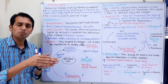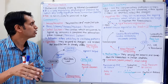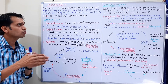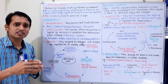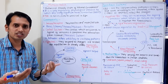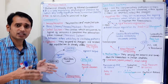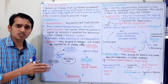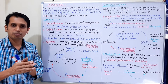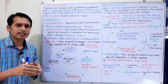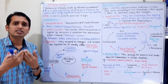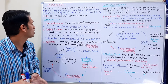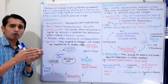Homeostasis is a self-regulating physiological process by which any living organism tends to maintain stability. The living organism maintains its internal environment in a steady state so that it can survive long-term. When stress is applied, cell physiology and structure are altered, activity increases, and cell injury or irreversible cell death can occur. Therefore, homeostasis is necessary for the survival of life.